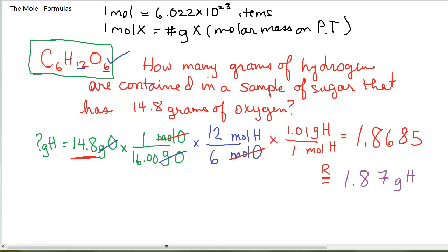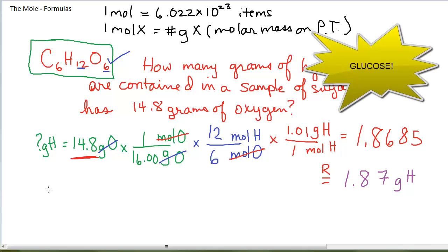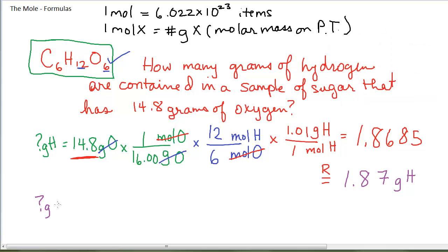This leads us to the next realization about the formula. In a sample that has 14.8 grams of oxygen, there would be 1.87 grams of hydrogen. What I might want to know is, how many grams of sucrose, sugar, would that be altogether? How many grams of C6H12O6 would that be if I have 14.8 grams of oxygen? I can work it starting from here.